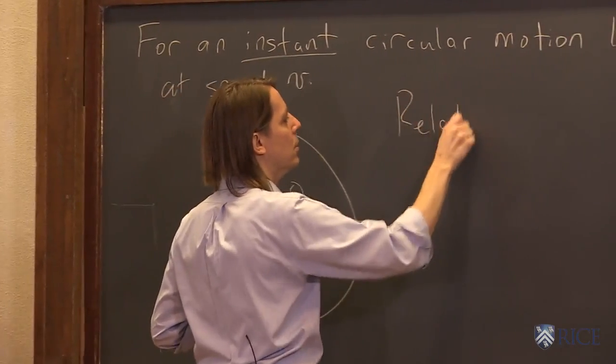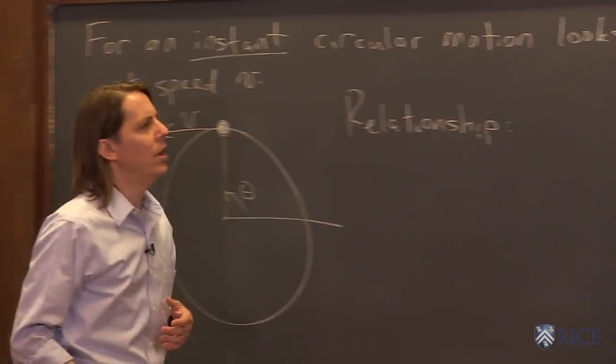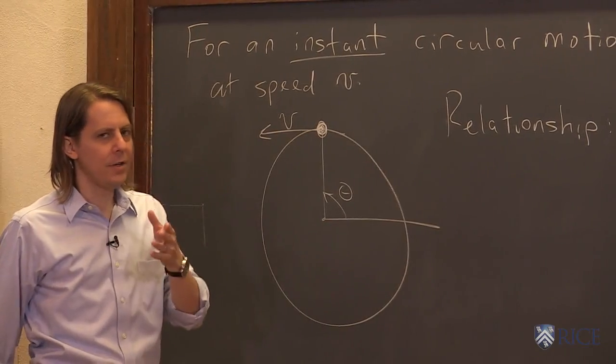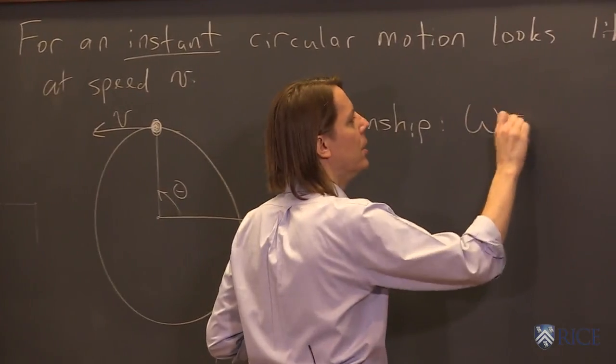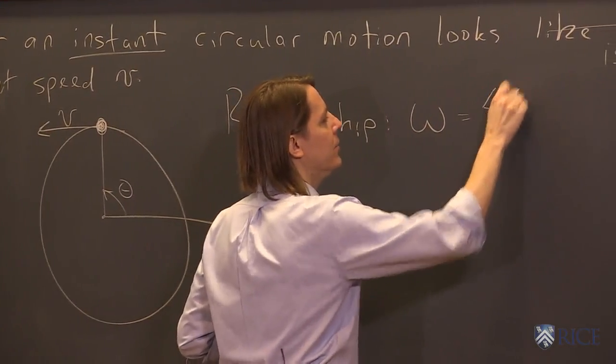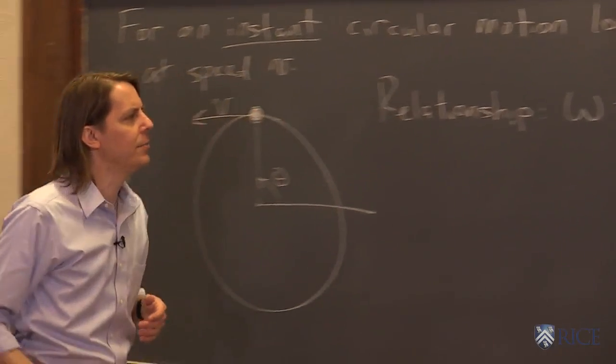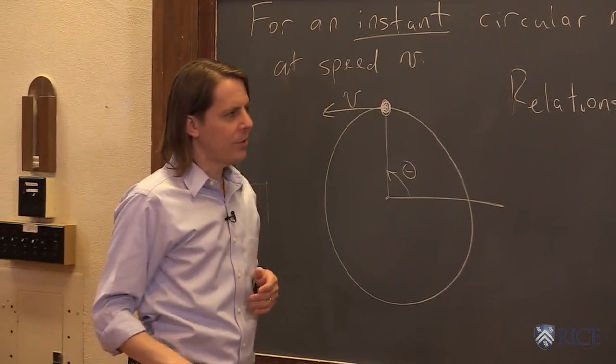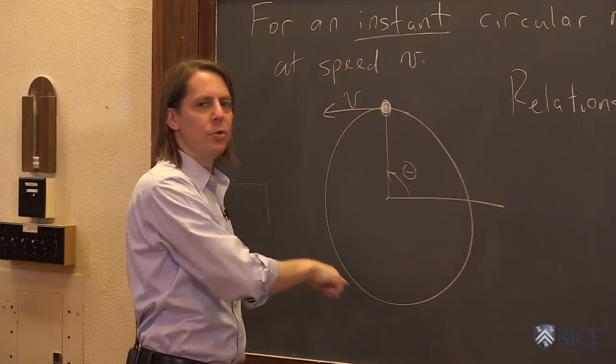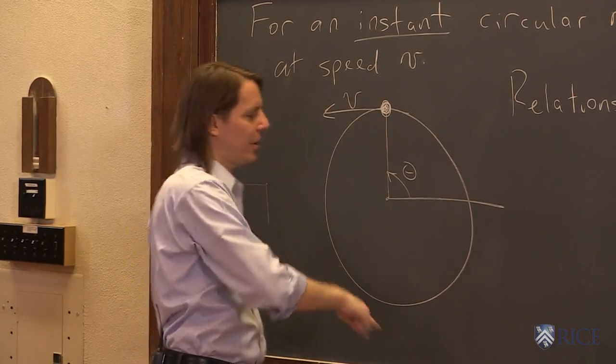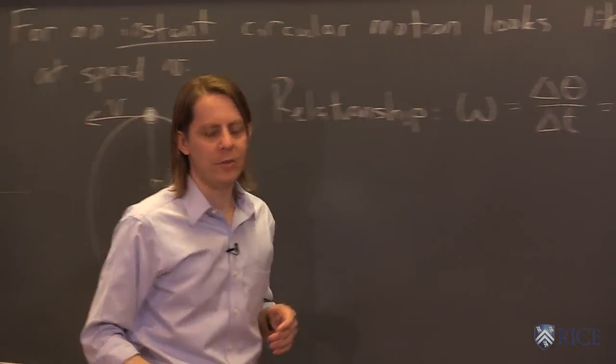So the relation between the two would be what? Well, let's find it by calculating omega based on what we know. So omega is delta theta over delta t. We know that. And as it goes around, let's think about a full revolution. It goes around 2π. If we were to think about an entire revolution, it would be 2π radians, because we like to work in radians.